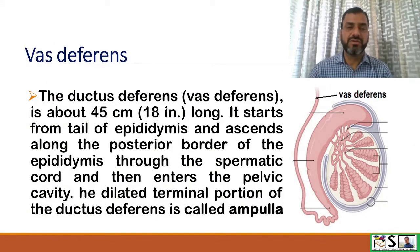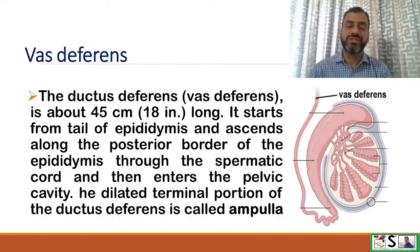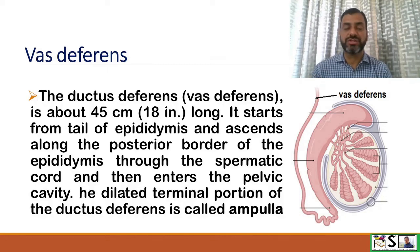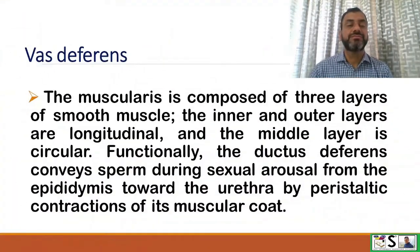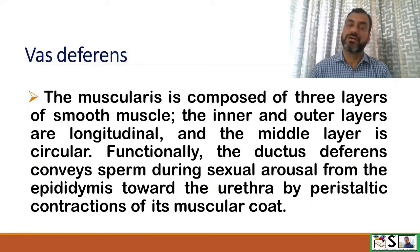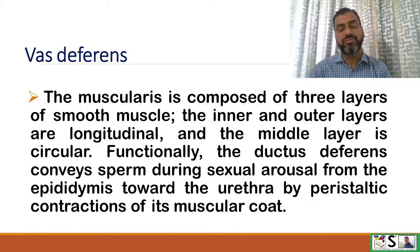The next duct is the Ductus Deferens, also called Vas Deferens. It is about 45 cm long, starts from the tail of the Epididymis, ascends along the posterior border of the Epididymis through the spermatic cord, and then enters the pelvic cavity. The dilated terminal portion is called the ampulla. The muscularis is composed of 3 layers of smooth muscle: inner and outer longitudinal layers and a middle circular layer. Functionally, the ductus deferens conveys sperm during sexual arousal from the Epididymis toward the urethra by peristaltic contractions of the muscularis.